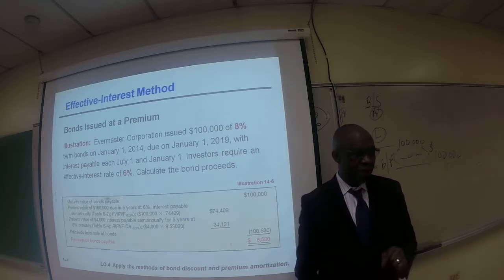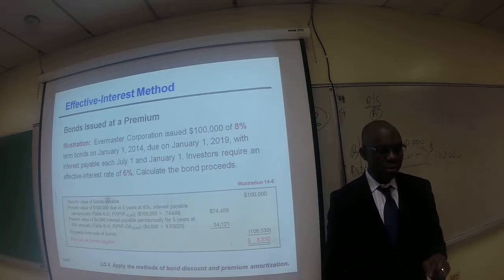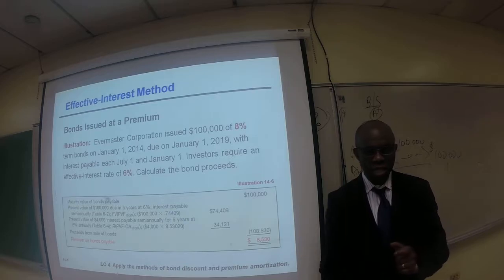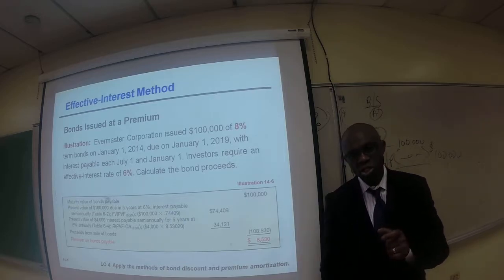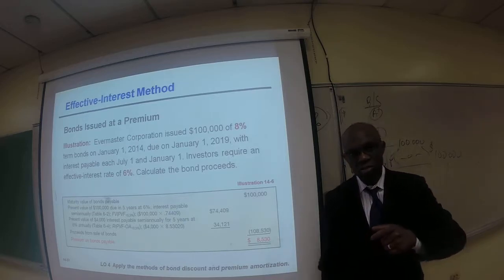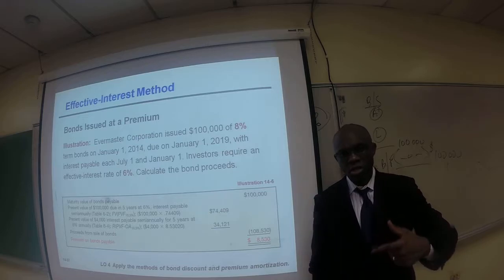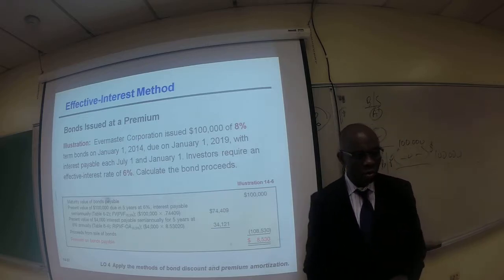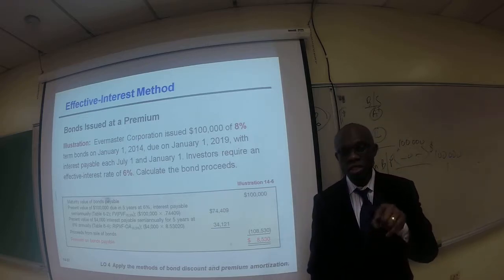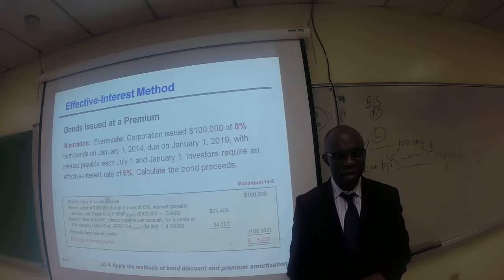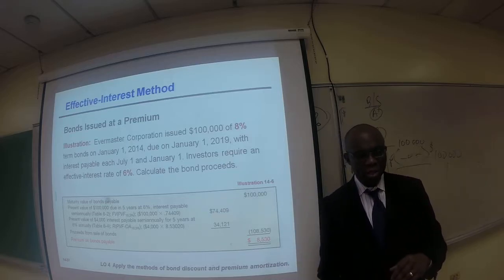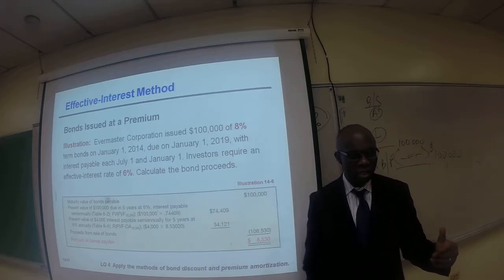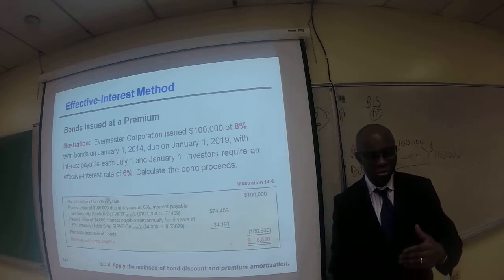In part 5, we talked about the amortization of discounts, and we said that the amortization of discounts wound up being additional interest expense. Now let's take a look at using the effective interest method, and let's take a look at the amortization of premium.